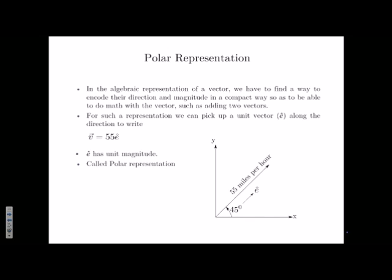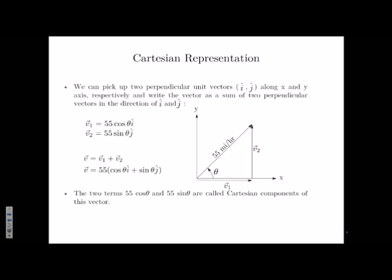So now, this is encoding the information about the length or the magnitude, and e-hat, which is a unit vector along this direction, is telling you what direction it is. But it doesn't seem very satisfying. Because what is e-hat? How do we really write e-hat? 55 is fine, that's the magnitude. How do we really write e-hat? So this is what we call a polar representation. It's a very compact way of algebraically representing a vector. But I'm pretty sure that you have seen something else as well. So let's talk about that. And that's called Cartesian representation.